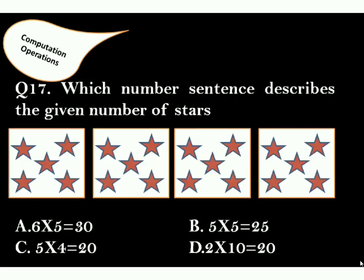Question 17: Which number sentence describes the given number of stars? Correct answer is option C, as there are 4 boxes with 5 stars in each. Hence, 5 into 4 is 20.